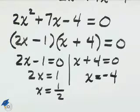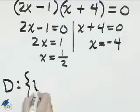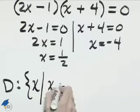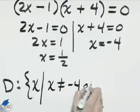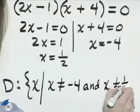So the domain of this function will be the set of all real values x, such that x is not equal to negative 4, and x is not equal to 1 half.